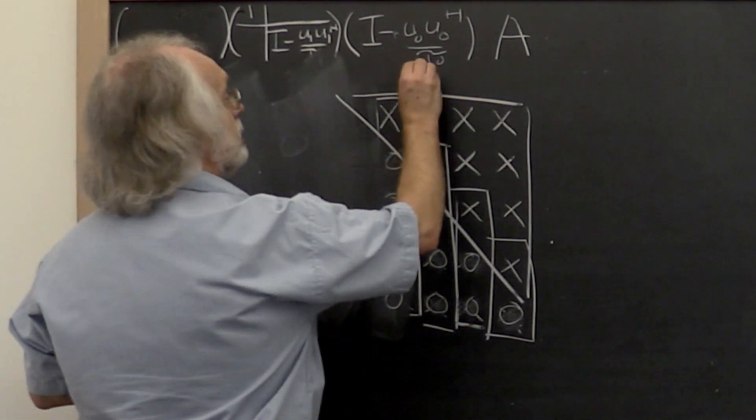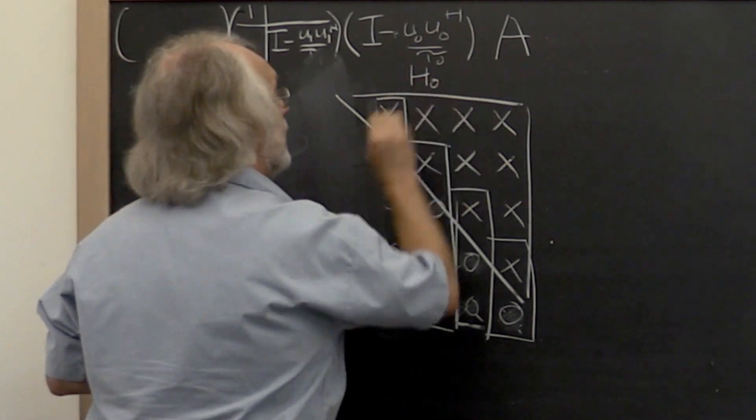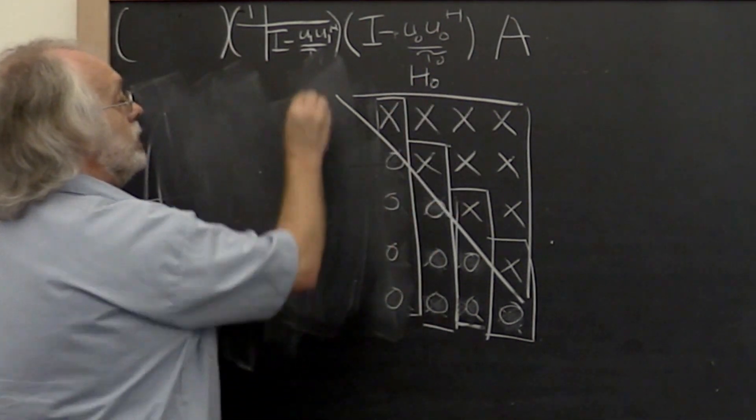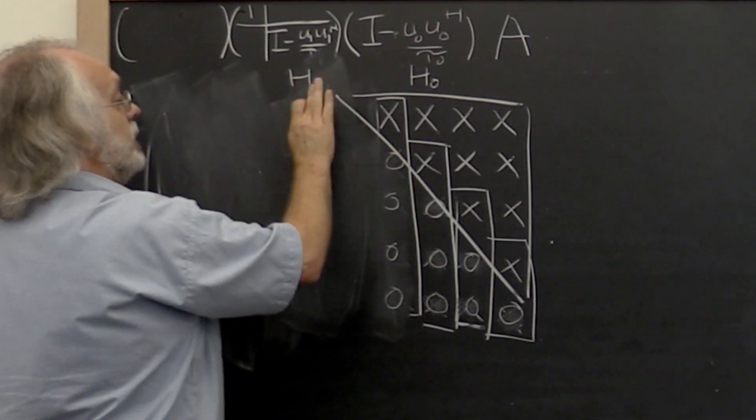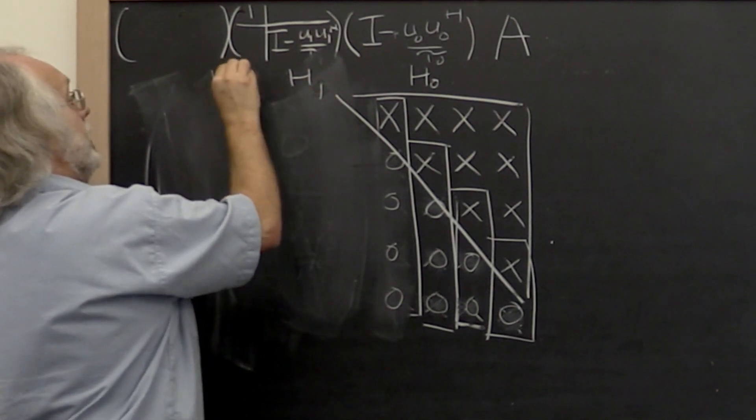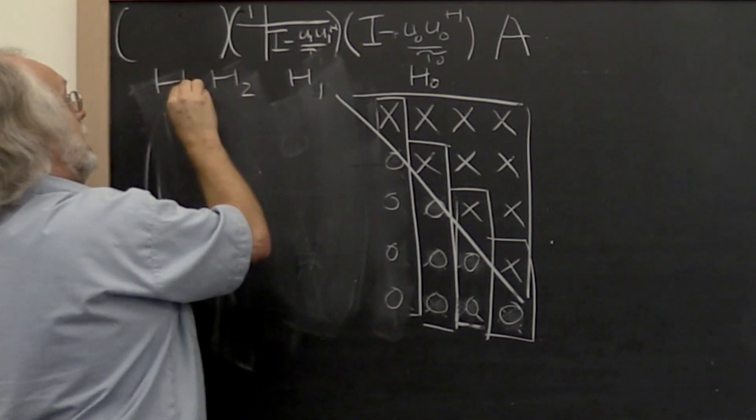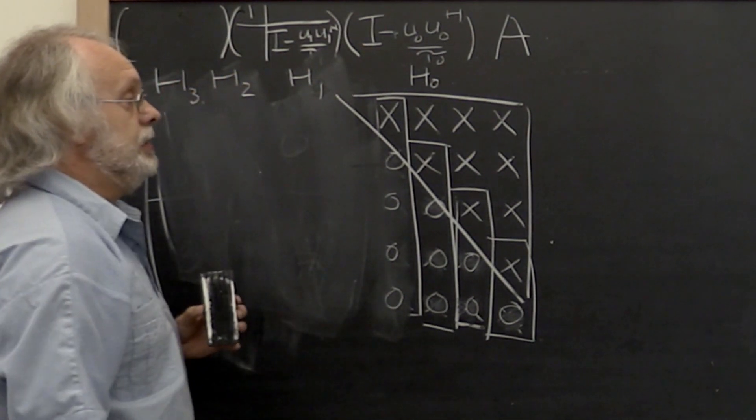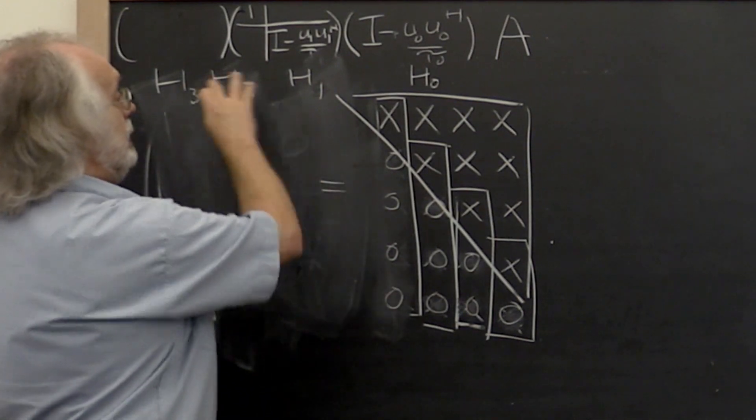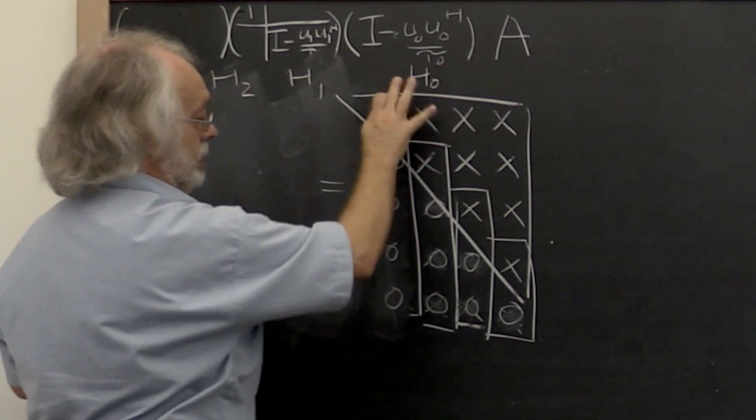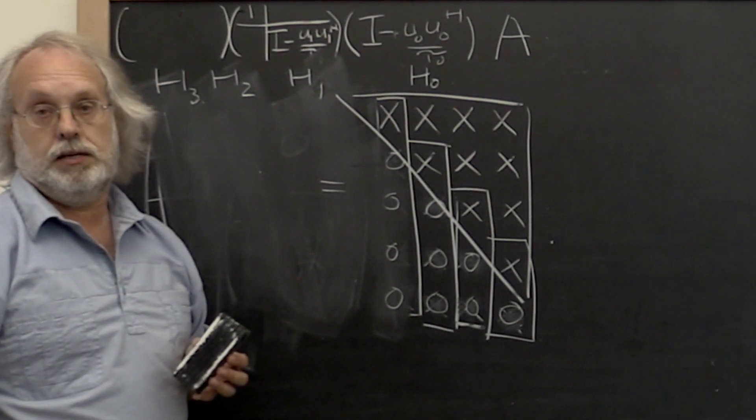And what we recognize here is that this is our unitary matrix H0 that we wanted. This is our unitary matrix H1, H2, and H3. And this times A then leaves us with this matrix right here.